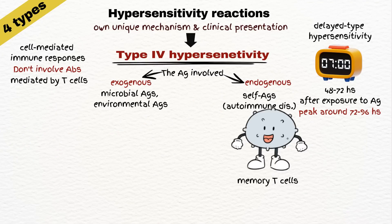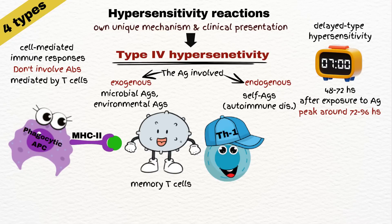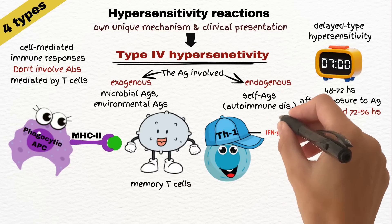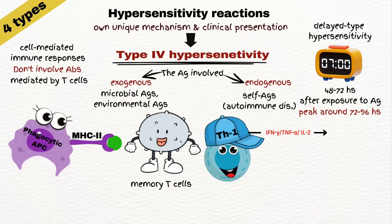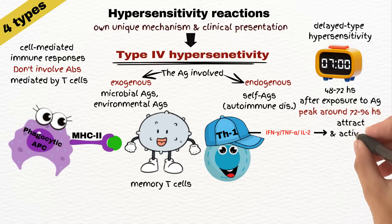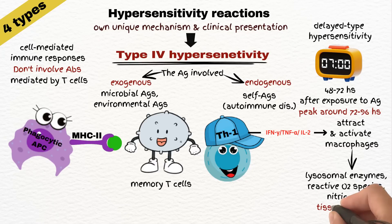Upon subsequent exposure to the same antigen, memory T-cells quickly recognize the antigen-MHC complex presented by antigen-presenting cells. Activated T-helper 1 cells release pro-inflammatory cytokines such as interferon gamma, tumor necrosis factor alpha, and interleukin-2. These cytokines attract and activate macrophages and other immune cells to the site of antigen exposure. The recruited macrophages become highly activated and release lysosomal enzymes, reactive oxygen species, and nitric oxide, contributing to tissue damage and inflammation.